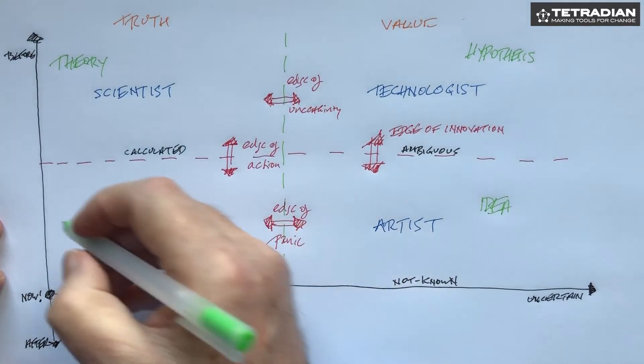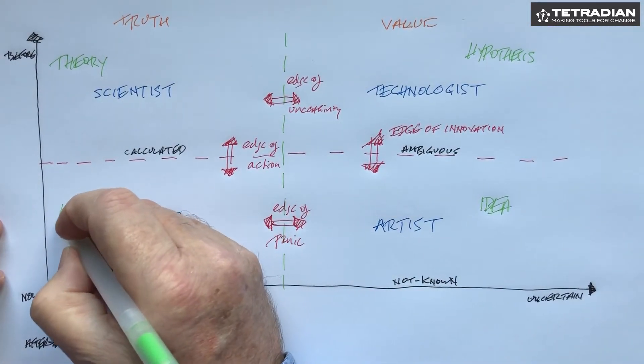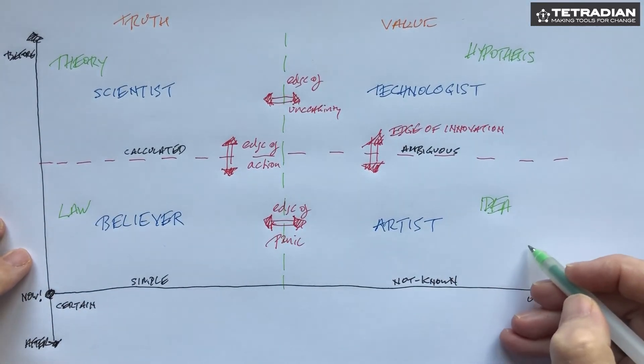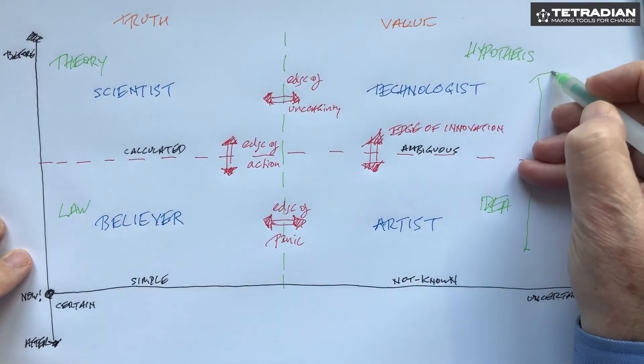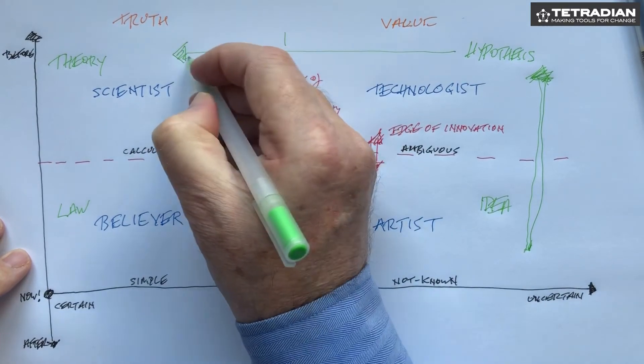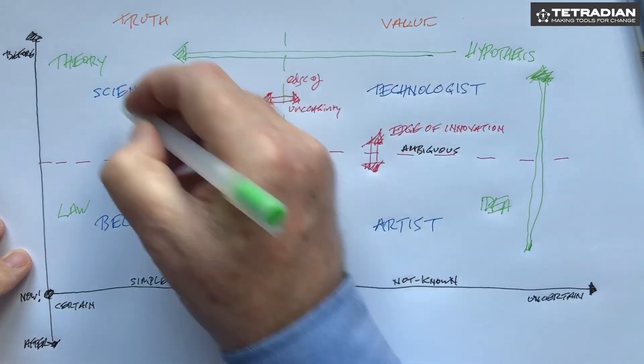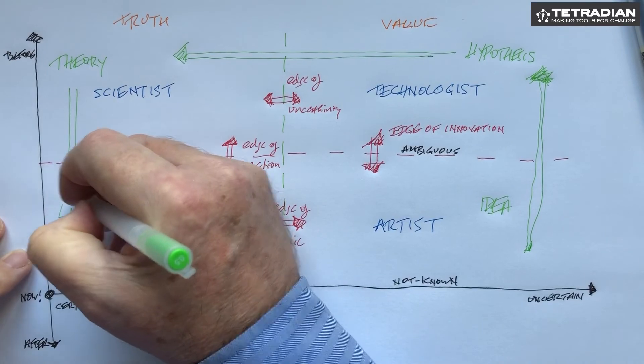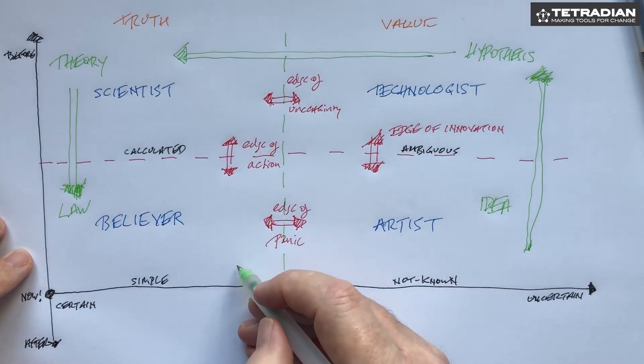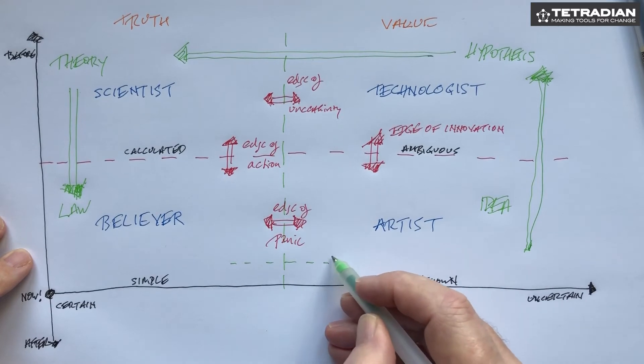And from there we derive what we think of as scientific law or some kind of law. So there's a very strong loop or strong link that goes from there to there. The flow is in this direction. But there's a catch. If we think of it as a development loop it should go back to new ideas again.